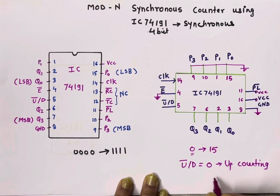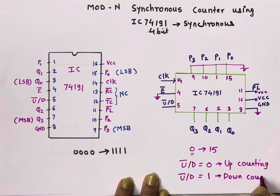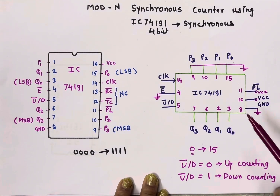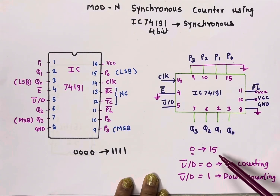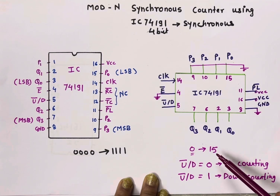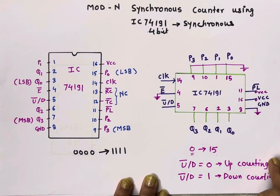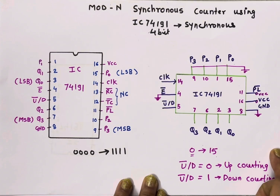For down counting, connect pin number 5 to VCC. So to count from 0 to 15 or from 15 to 0, we make connections in this way. Now let's see how to implement a Mod 12 counter using IC 74191.